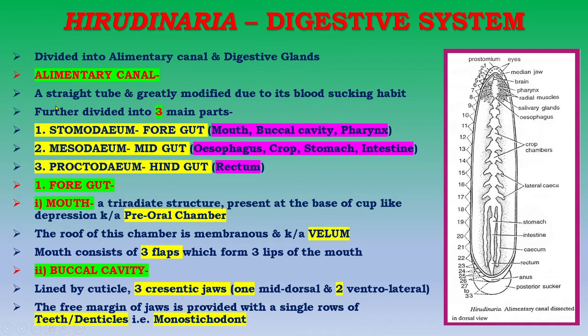The alimentary canal is a straight tube and it is greatly modified due to its sanguivorous habit, that is blood-sucking habit. It is further divided into three main parts. The first part is the stomodium, also known as the foregut.